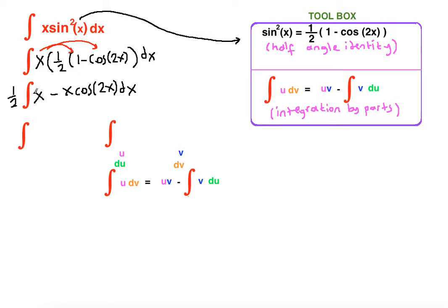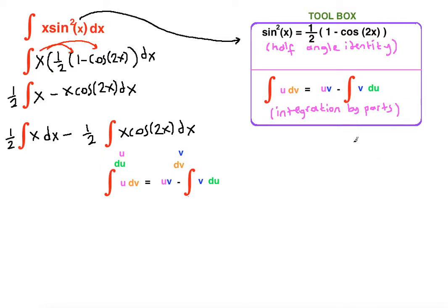At this step we can separate this integral into two separate integrals: one-half ∫x dx minus one-half ∫x·cos(2x) dx. The one-half is distributed to both integrals.